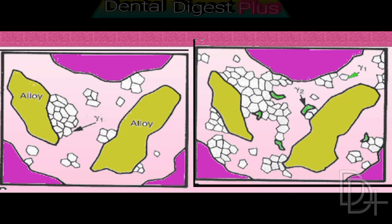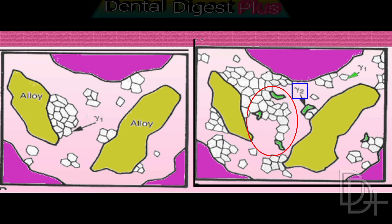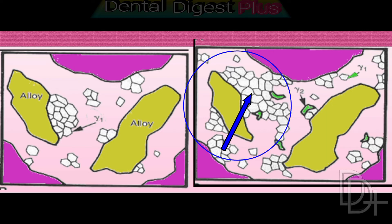Because the solubility of silver in mercury is much lower than that of tin, the gamma-1 phase precipitates first, and the gamma-2 phase precipitates later. In the second picture you can see that gamma-1 crystals are formed surrounding the unreacted silver-tin alloy particles, which form the core of the set matrix.